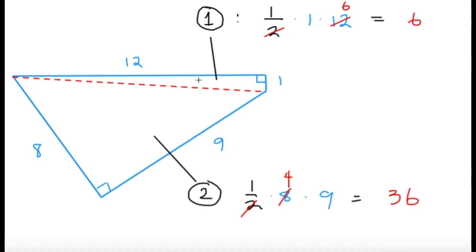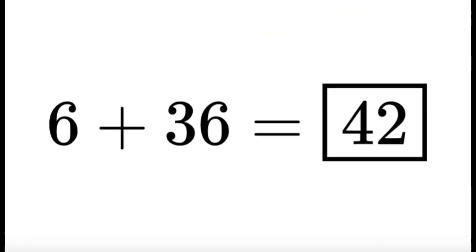Now since this part has an area of 6, this part has an area of 36, we want the combined shape, so the area of the shaded region would simply be 6 plus 36, which is equal to 42. And this will be our final answer.